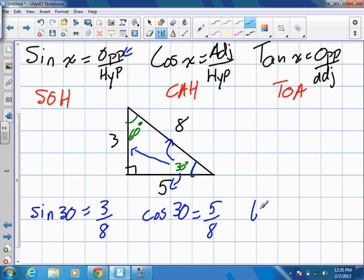And what will tangent 30 be? Five. That's right. That'll be adjacent, or sorry, opposite, which is three, over adjacent, which is five.